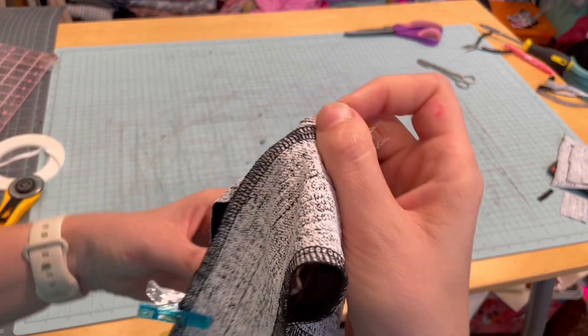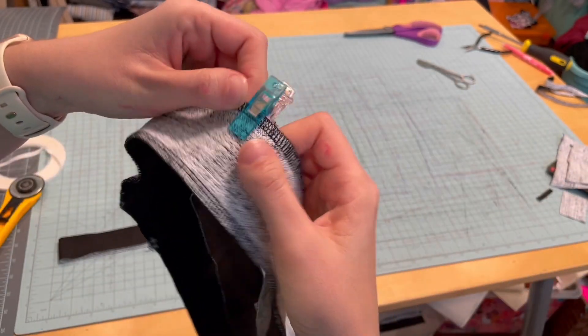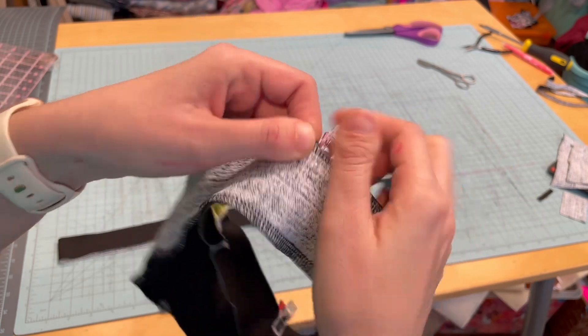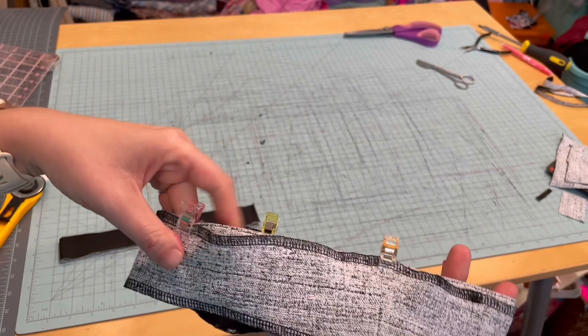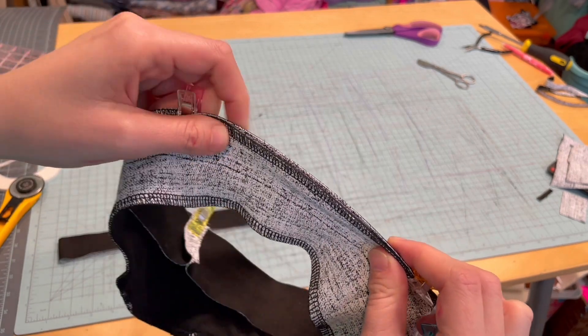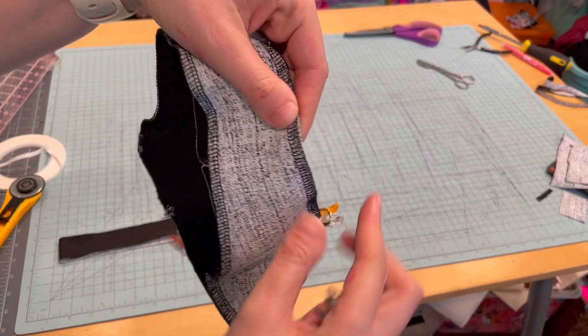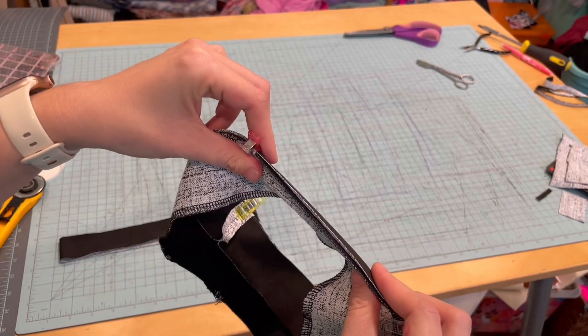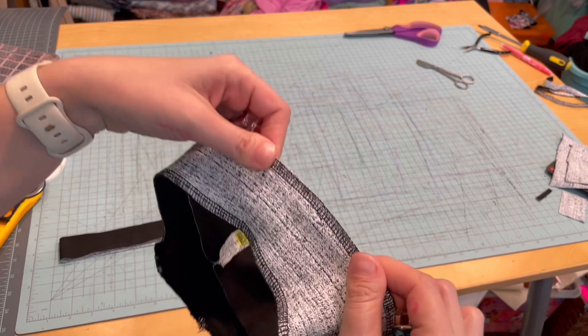If you want, you can go ahead and do your bottom binding at the same time, or you can do them separately. But we'll do the same thing for the bottom. You'll quarter the bottom and quarter the binding. You'll see you'll have to stretch the binding to fit just a little bit, and we're going to sew that together with 3/8 of an inch seam allowance. I'm going to go ahead and do the bottom binding too, and then I'll show you how to finish it with binding.